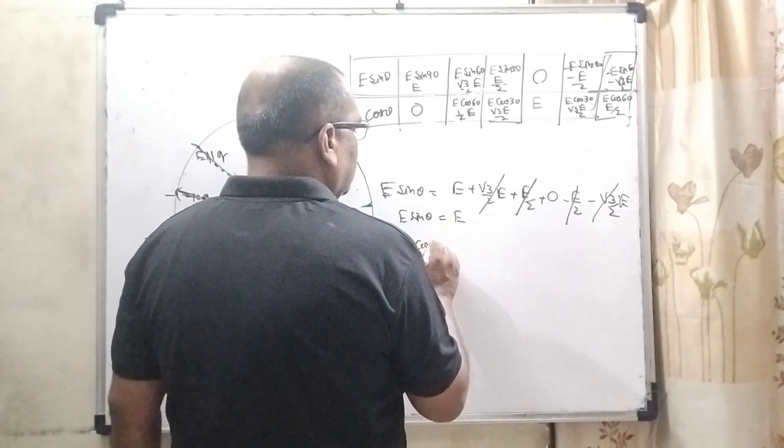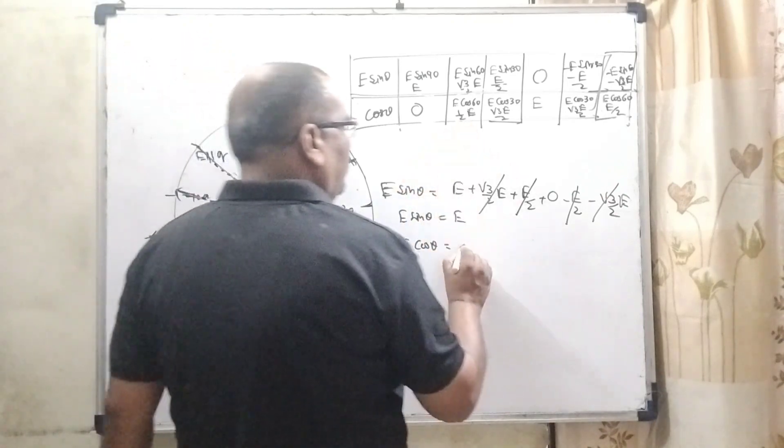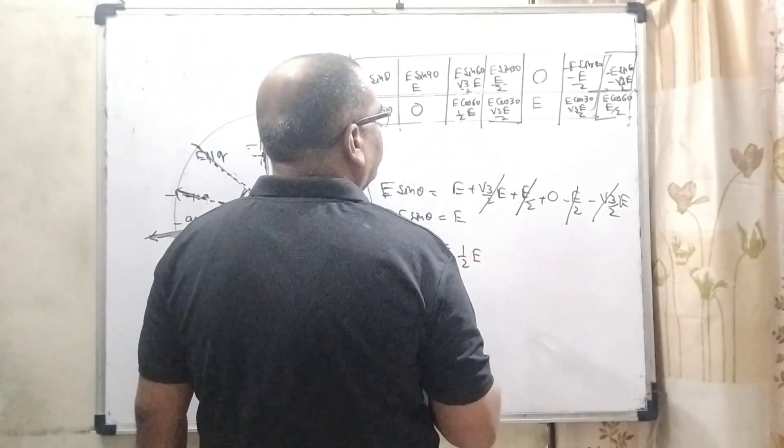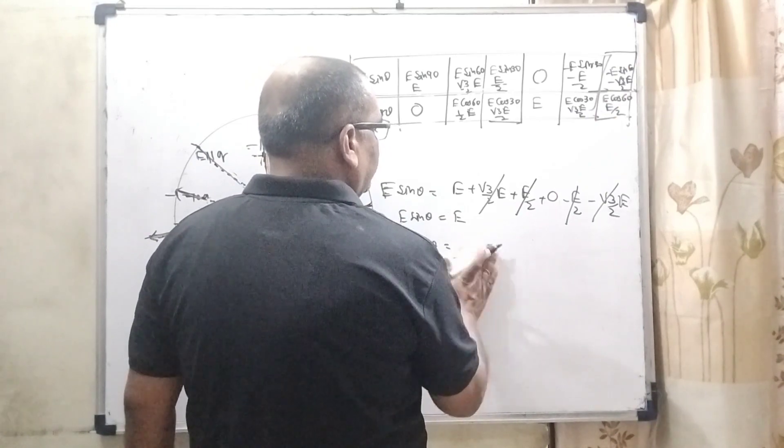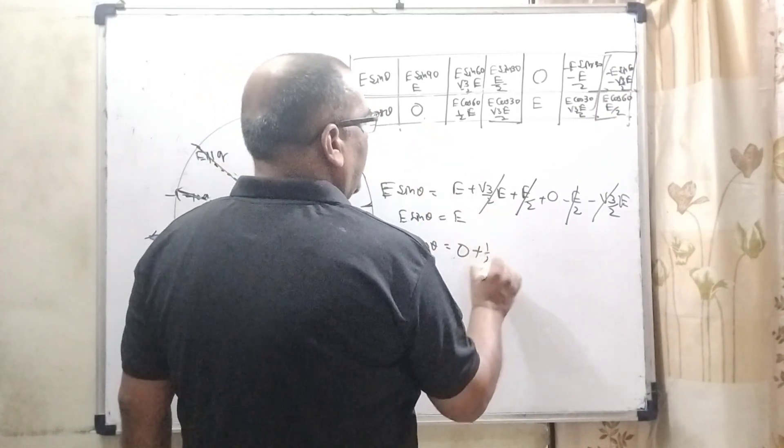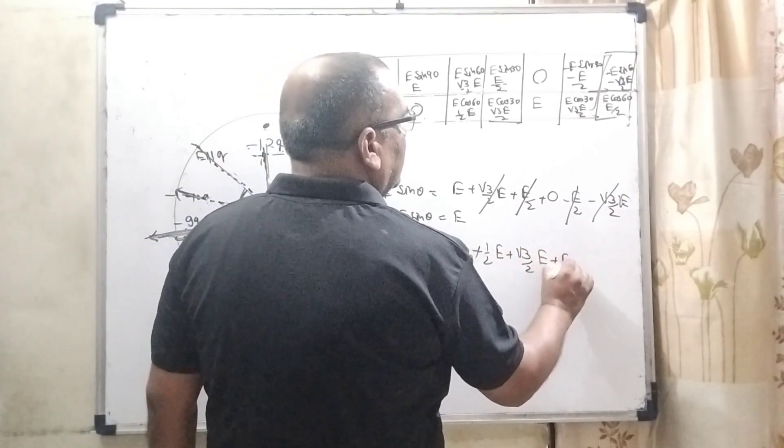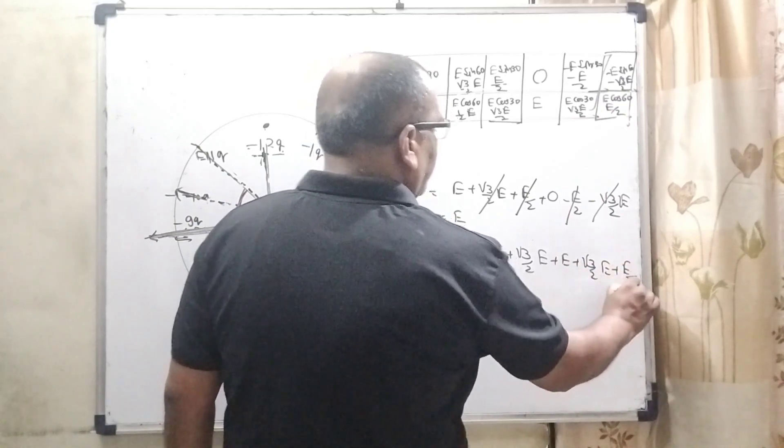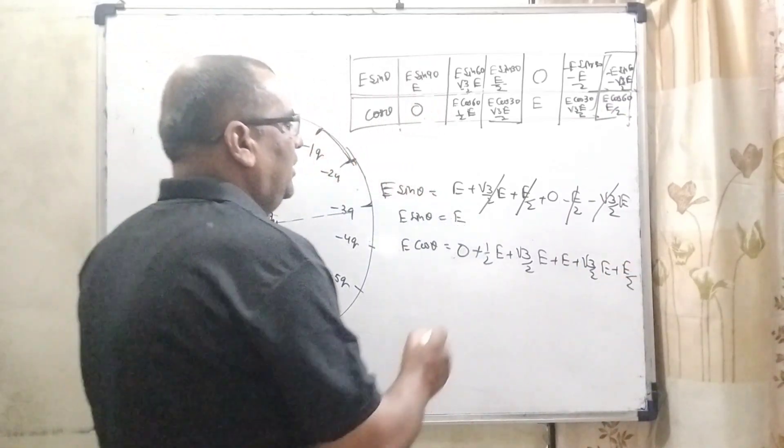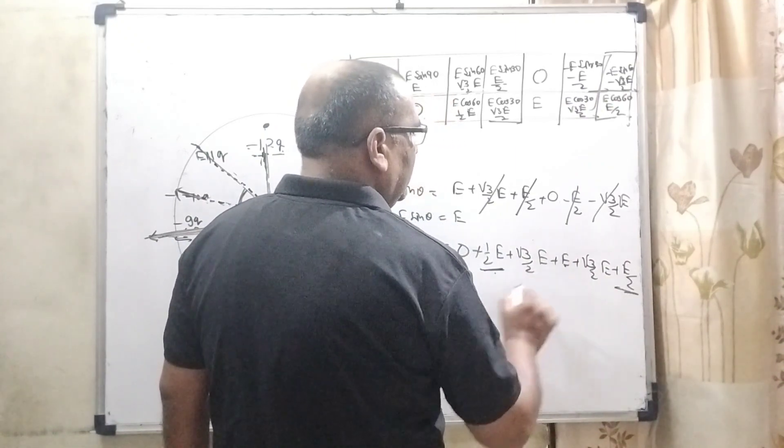Now E cosine theta, what is the value? That is 0, first 0, 1 by 2 E, root 3 by 2 E plus E, root 3 by 2 E and E by 2. So here 1 by 2 E, 1 by 2 E, that is E and E, that is 2E.